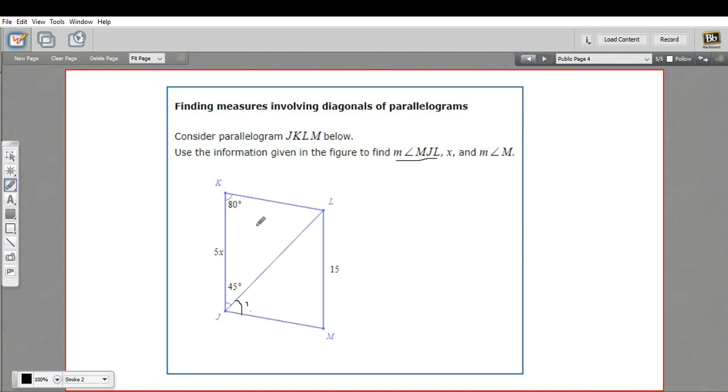The property we're going to use here is the fact that consecutive angles, so angles that are next to each other, meaning this angle and this angle, if you add them together, they have to equal 180. So 80 plus 45 plus whatever it is that we're looking for, so I'll call that x, has to add up to 180.